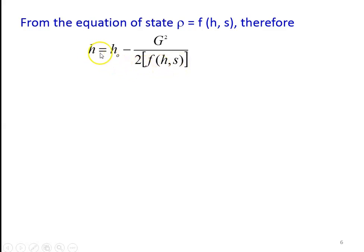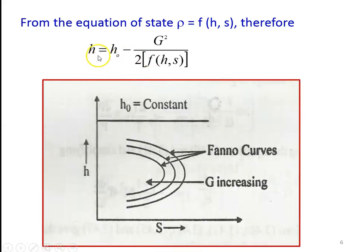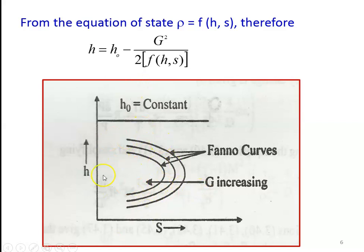This equation is plotted as a curve taking specific entropy on the x-axis and specific enthalpy on the y-axis. H₀ is constant and we have different curves for different values of G (mass flow density). When moving in the left direction, the value of G is increasing. We have curves for G1, G2, G3, and so on, where the inner curve has a higher value of G than the outer curve.